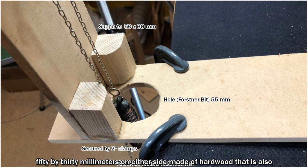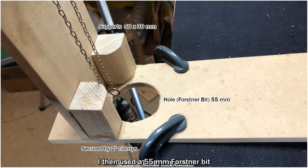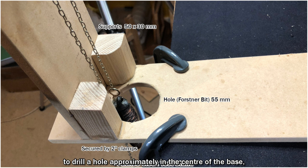I then used a 55mm Forstner bit to drill a hole approximately in the center of the base. You'll notice here that I'm using two-inch G clamps to hold the piece onto my bench so that it doesn't move.